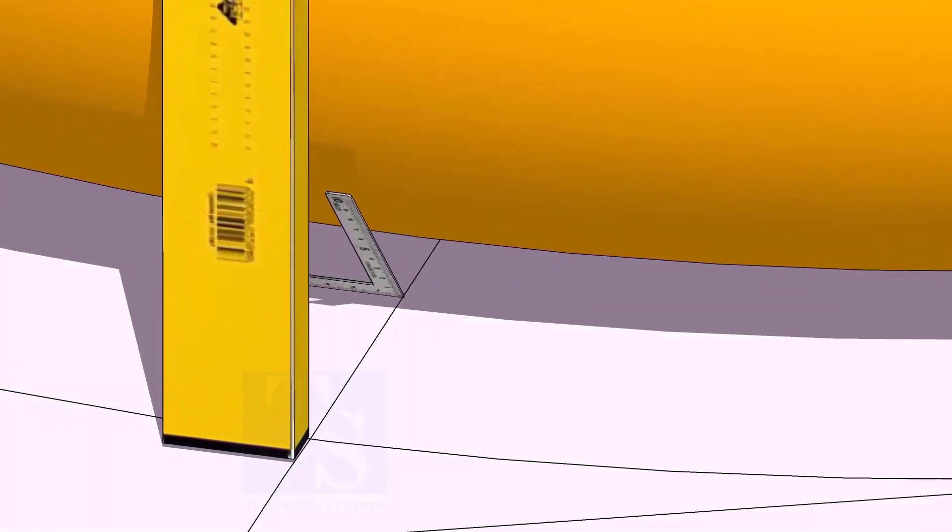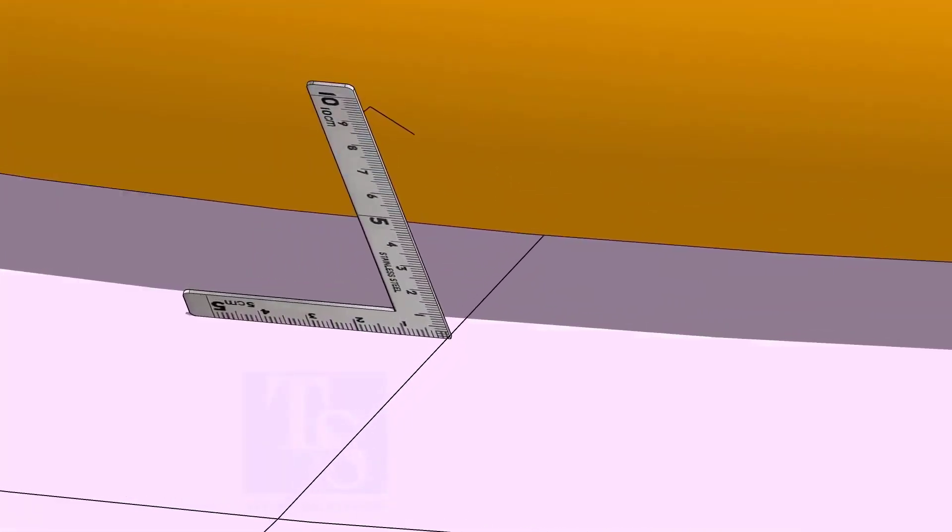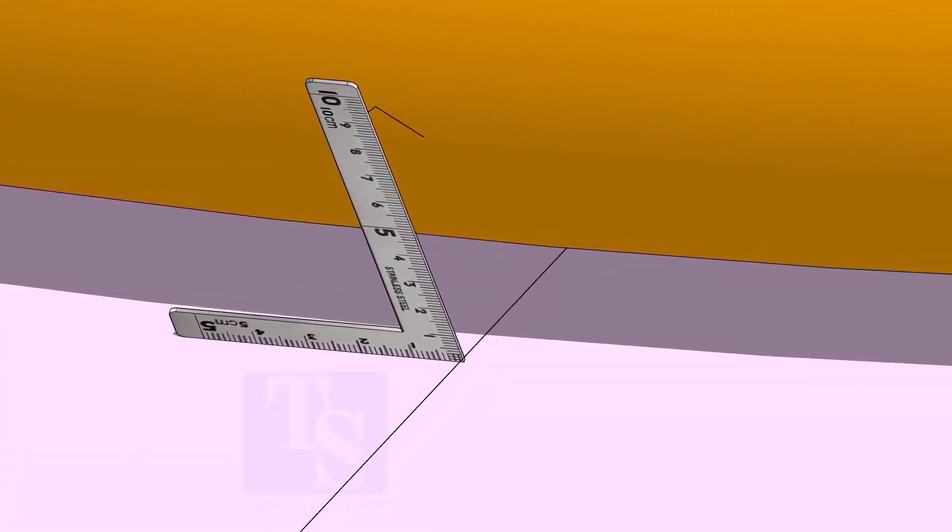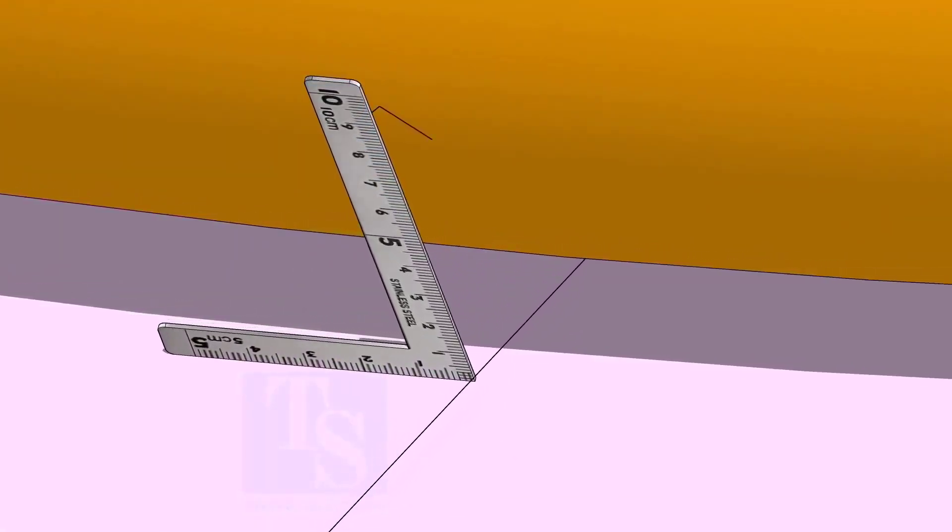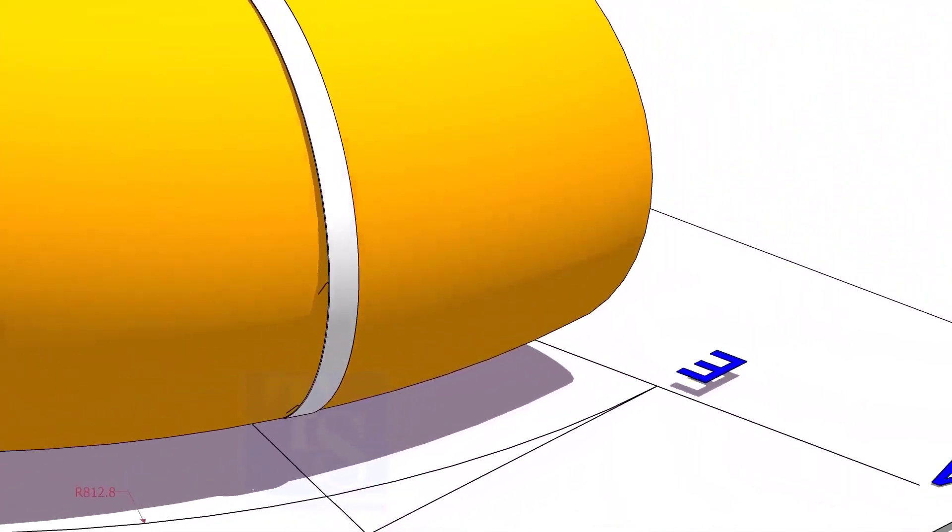At the bottom side, use a small right angle and transfer the line to the elbow on both sides. Use a bend scale and connect the marks to form a circle around the elbow.